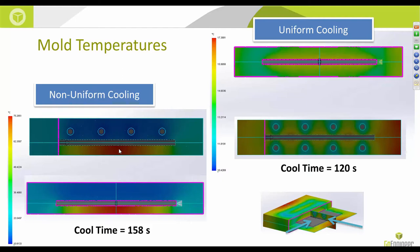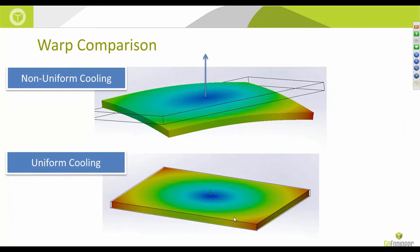In the non-uniform cooling case, the mold temperature is about 75°C towards the bottom half. This directly affects how long parts take to cool — the uniform case took about 120 seconds while the non-uniform case took about 158 seconds. As for warpage: the non-uniform cooling layout shows drastic out-of-plane warping, while the uniform cooling layout has mostly in-plane shrinkage with almost non-existent out-of-plane warpage.